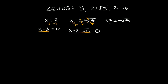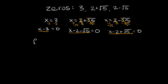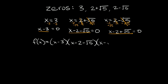And lastly, for x equals two minus the square root of five, we subtract two and add the square root of five to both sides. Those cancel out and we get x minus two plus the square root of five equals zero — so that's another factor. Those are our three factors, and now we just have to multiply them together. So f(x) equals (x minus three)(x minus two minus the square root of five)(x minus two plus the square root of five).